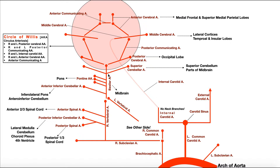Continuing up, there is the superior cerebellar artery, left and right. So there are really three cerebellar arteries total. The superior cerebellar arteries are the last true branches of the basilar artery before it terminates and bifurcates into the posterior cerebral arteries. The superior cerebellar arteries supply the superior cerebellum and parts of the midbrain, and the basilar artery itself also has direct branches that supply the midbrain.